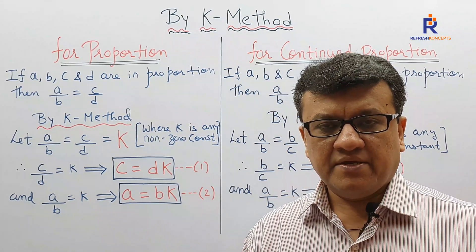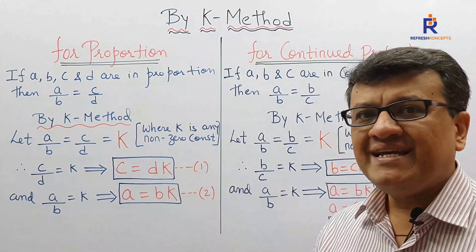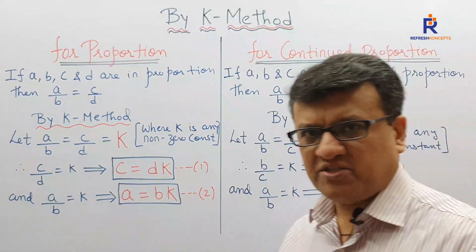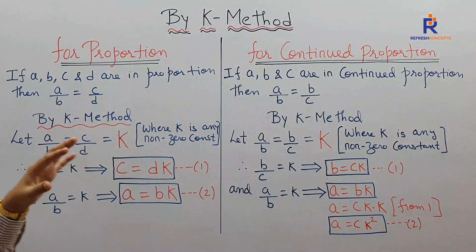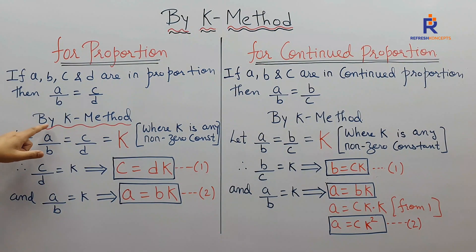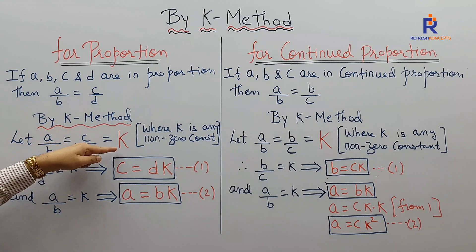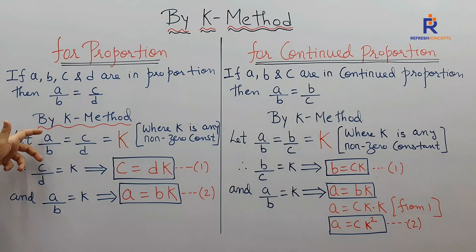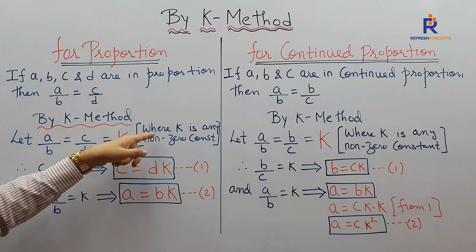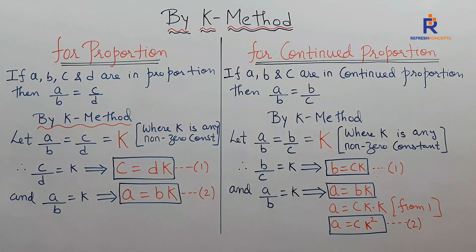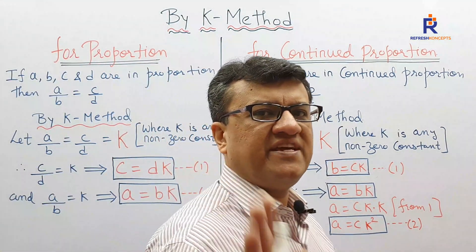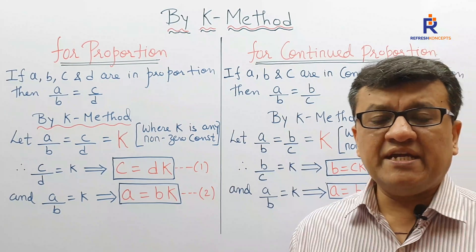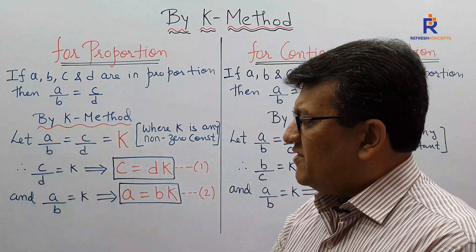If you want to prove LHS equals RHS by K method, we introduce K. Let A by B equal C by D, which equals K. Every ratio has some kind of value, so we say A by B equals C by D equals K, where K is any non-zero constant — it can be positive, negative, whatever.